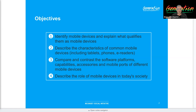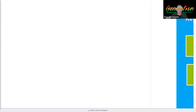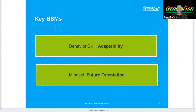In this session our ultimate goal is to identify mobile devices with ease and explain what qualifies them to be mobile, describe the characteristics of a common mobile device — which could include e-readers and phones — compare and contrast different platforms, capabilities, and accessories of mobile ports and device types, and lastly describe the role of a mobile device in today's society.